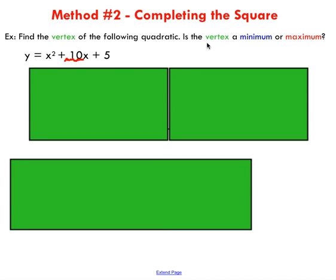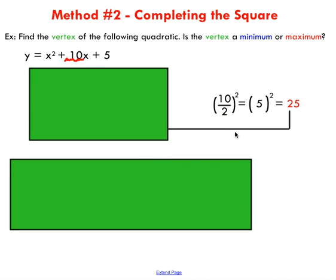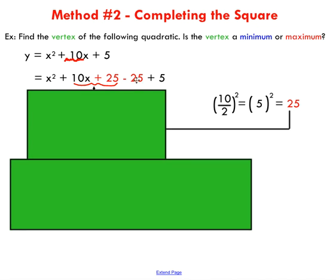The second method you can use to classify a vertex is completing the square. I've done a video tutorial on completing the square that you can take a peek at. The first thing you need to do is take this b term of your quadratic—the term in front of x—and perform this procedure: take the b term, divide by 2 and square it. Add and subtract it after our b term.